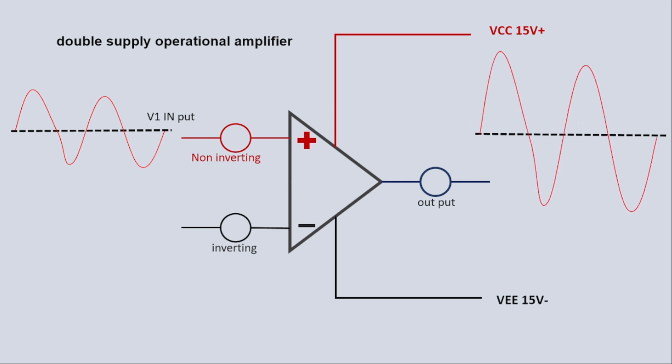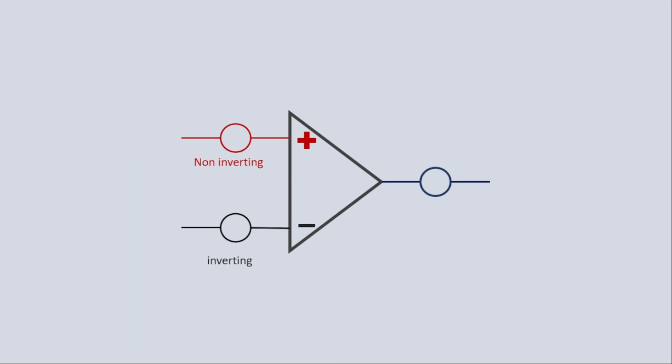There will be no change in the signal. The signal will remain the same but will be amplified. The signal will be amplified based on the supply source of the amplifier, but not more than that. Let's see how a single supply amplifier works.